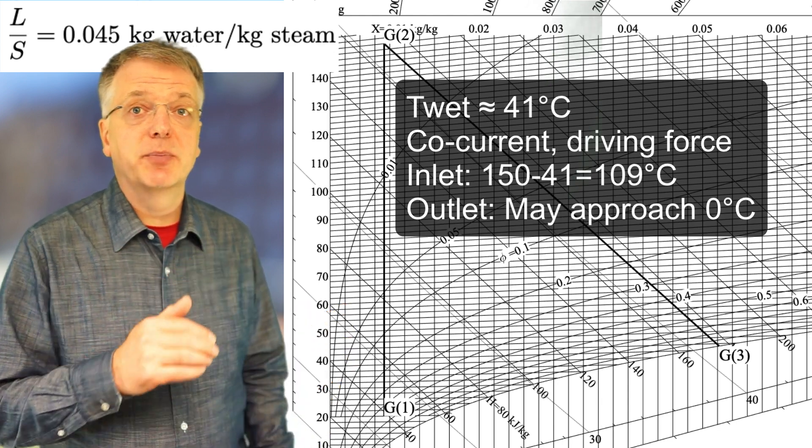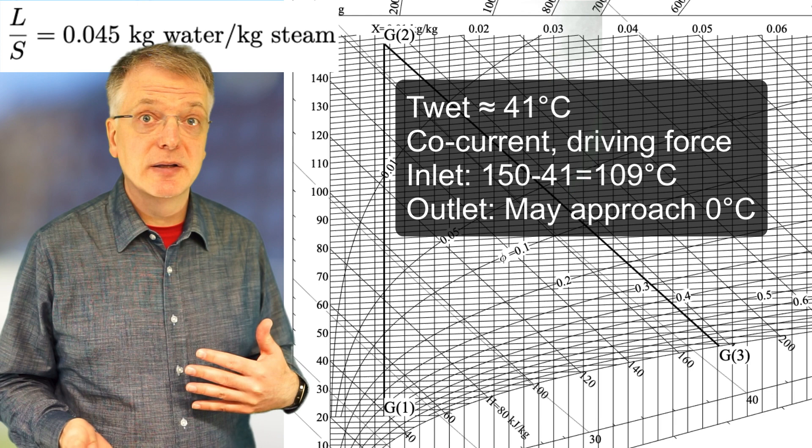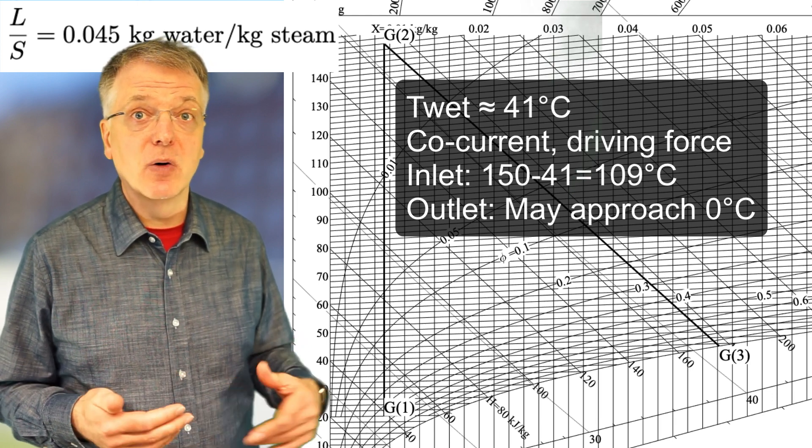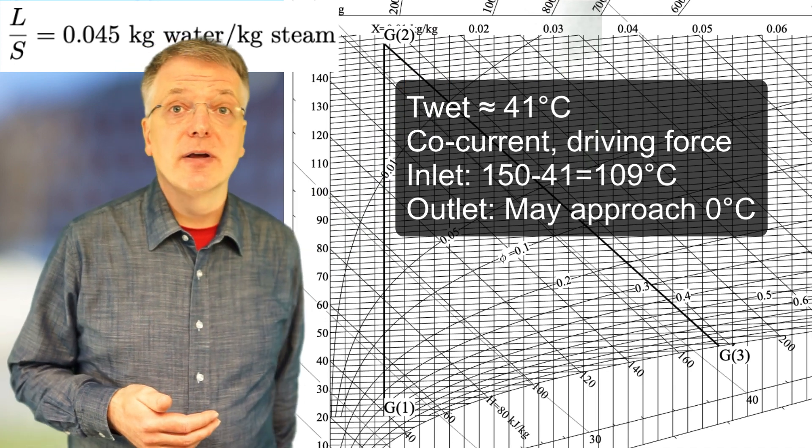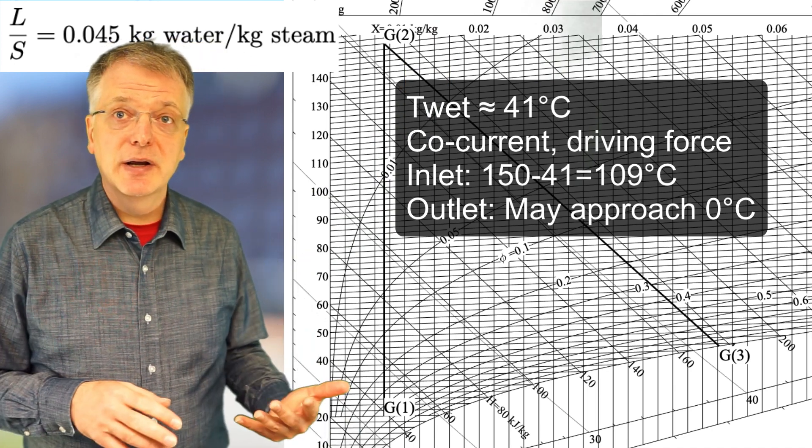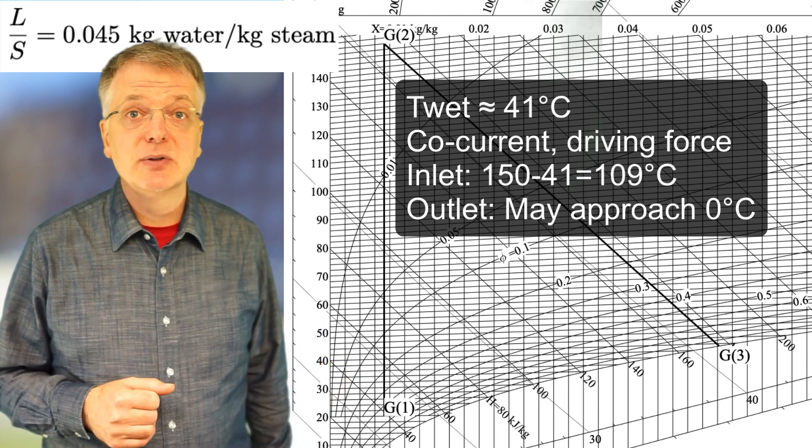If we let the relative humidity of the air approach 100%, that is, if we have an infinitely long dryer. On average, drying with air thus gives us a better driving force for heat transfer than drying with superheated steam.